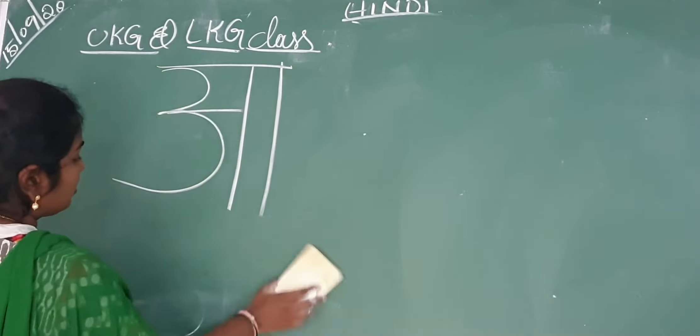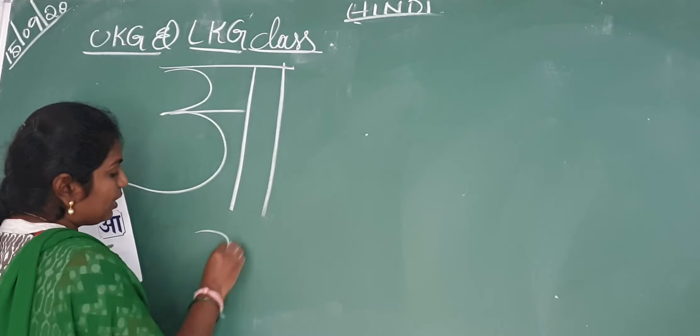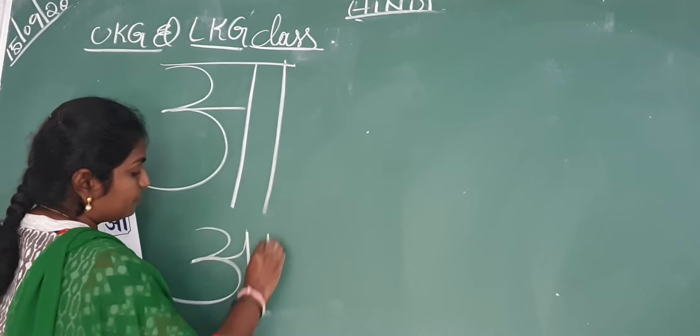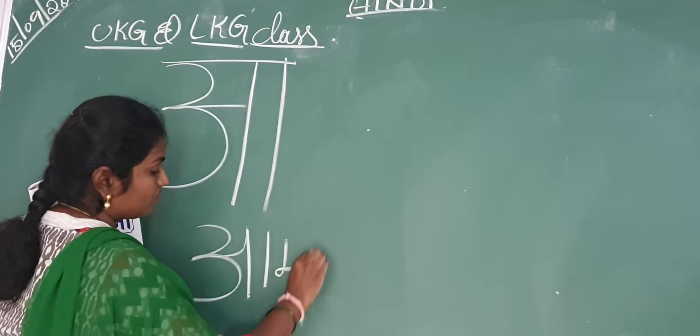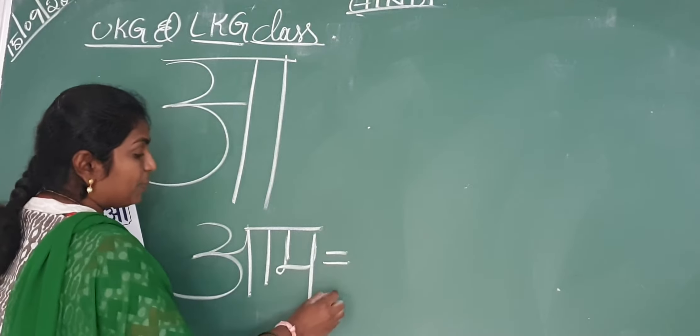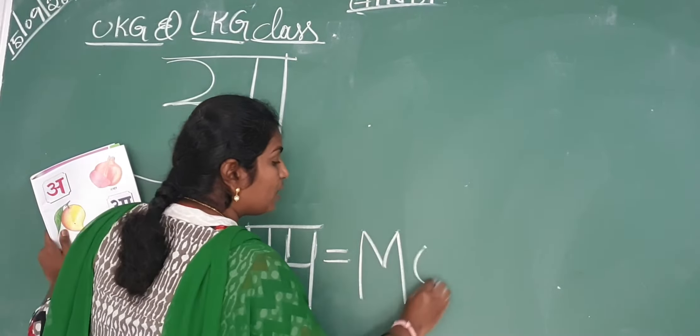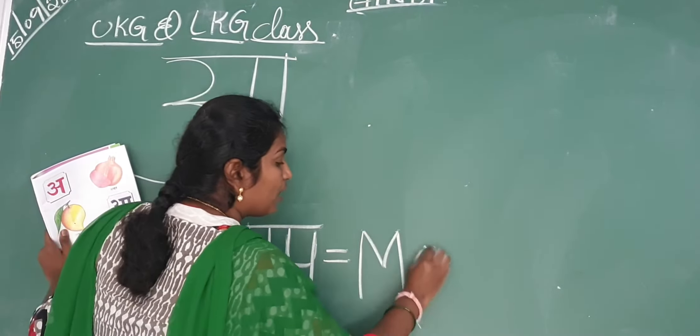What is the meaning of A? In English, what is the name of A? Mango. M-A-N-G-O. Mango. Here you will complete this paper. And then we will complete this paper.